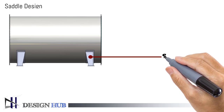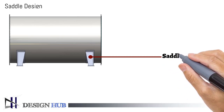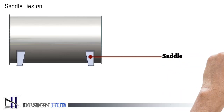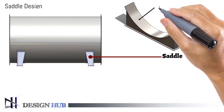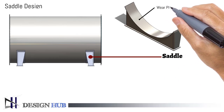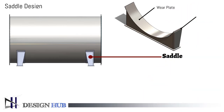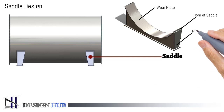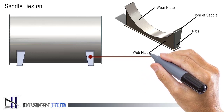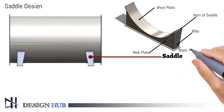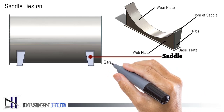This is the saddle, which is used to support the vessel. This is the wear plate, this is the horn of the saddle, these are the ribs, this is the web plate, and this one is the base plate.